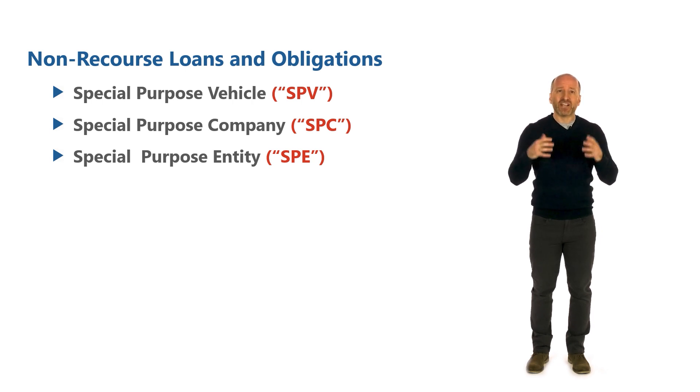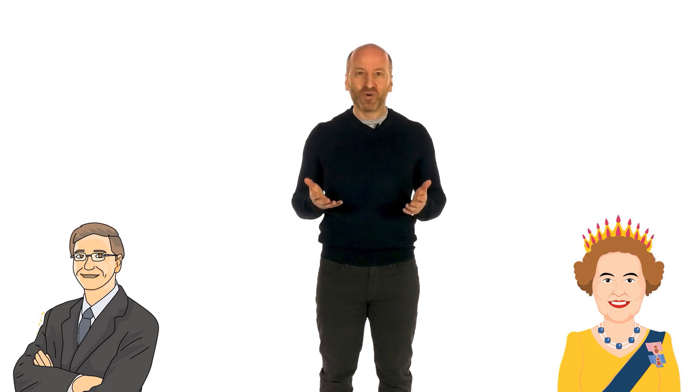That project company will typically borrow a lot of money to acquire some assets or build some assets. But the obligation to repay the loan stays at the level of that project company, and not at the level of the investors in that company. It doesn't matter if some of the wealthiest people in the world are the owners of that project. Like, even if Bill Gates and the Queen of England invested together to build a wind farm, the lenders to that project company cannot go after the personal assets of Bill Gates and the Queen in the event that the project fails to repay the loan.